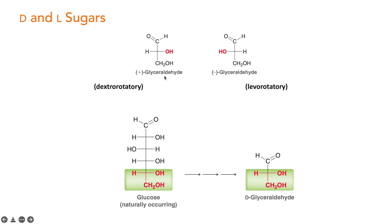The 'D' in D-glyceraldehyde stands for dextrorotatory, so it is also called D-glyceraldehyde or positive glyceraldehyde. If glyceraldehyde rotates plane-polarized light in the left direction — anticlockwise — then it is called negative glyceraldehyde. When it rotates to the left, it is levorotatory glyceraldehyde, called L-glyceraldehyde.